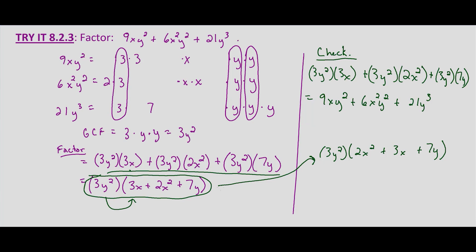It would be just as good of a solution, in my mind, to leave it with the 3x plus 2x² plus 7y. But just to be safe, you can always reorder it in descending order of the x variable.